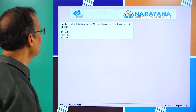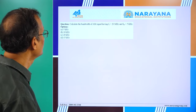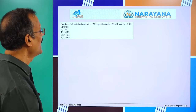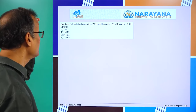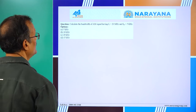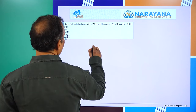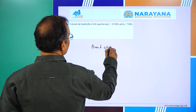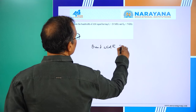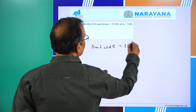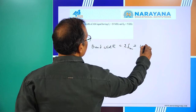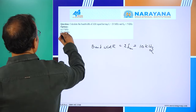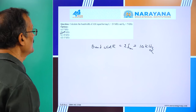Find the bandwidth. Carrier frequency is 20 MHz and signal frequency is 5 kHz. Bandwidth = 2 × signal frequency = 2 × 5 = 10 kHz. Answer is directly 10 kHz.